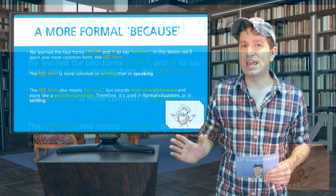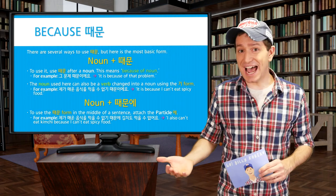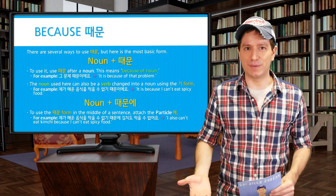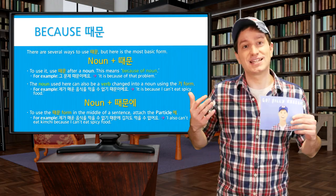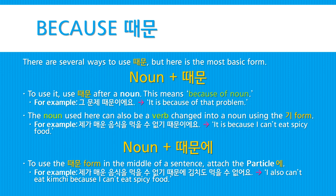There are two main ways that we can use this 때문 form: after a noun or even after a verb, but the form works in the same way. First, take a noun and attach 때문. This means 'because of noun.' For example, 그 문제 때문이에요 — 'It's because of that problem.' Now the noun used here can also be a verb changed into a noun using the 기 form. For example, 제가 매운 음식을 먹을 수 없기 때문이에요 — 'It's because I cannot eat spicy food.'